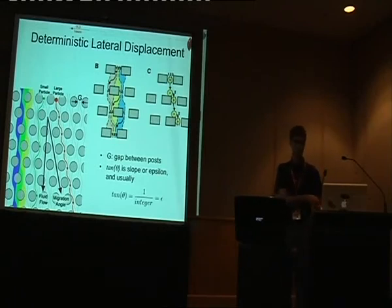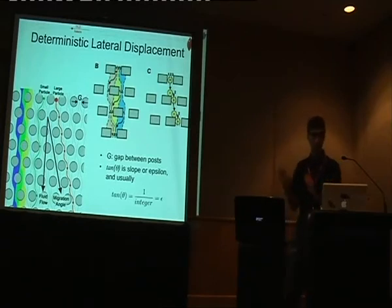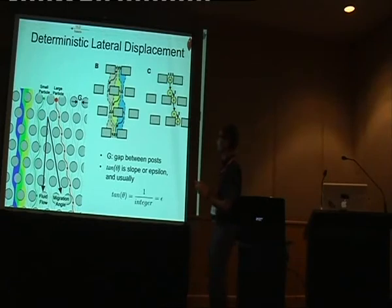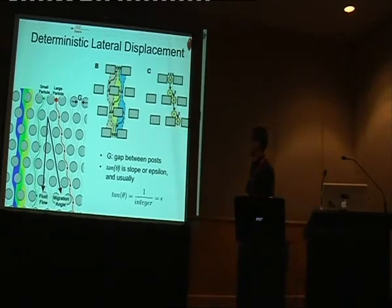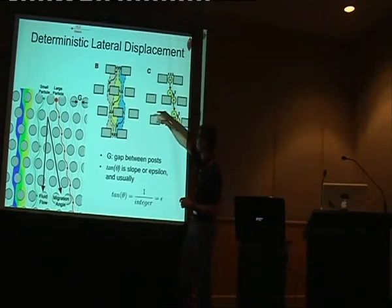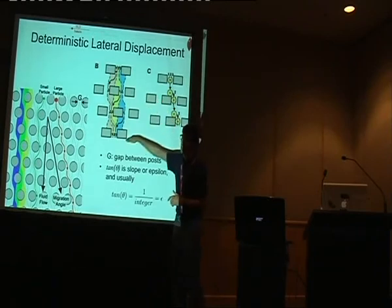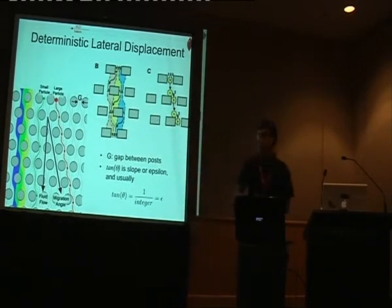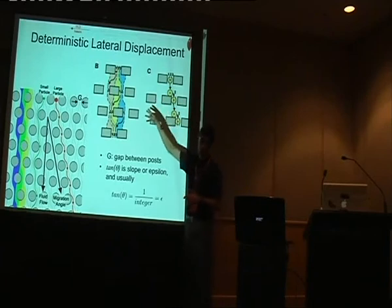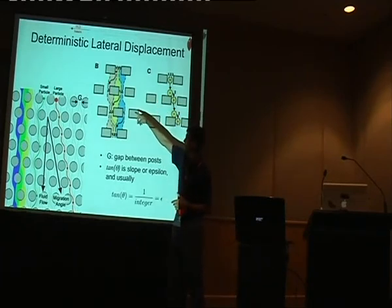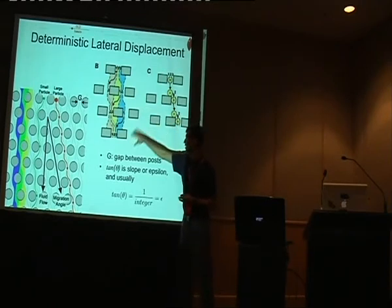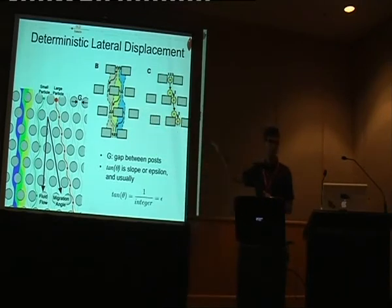He invented this thing working with polystyrene beads and we said we have to get blood into it. So it works like this: if you've got an array of posts that is periodic, such that you get back to the same position after three rows, you can divide the flow through each gap into three flow lanes that cycle — the first flow lane goes to the third, then back to two, then back to one. This is from the 2004 Science paper.